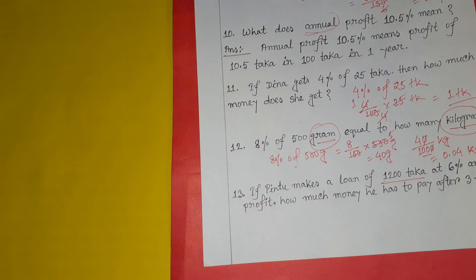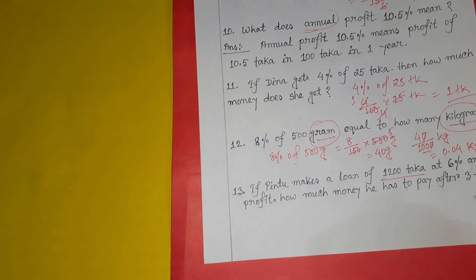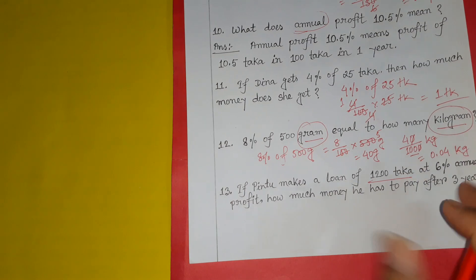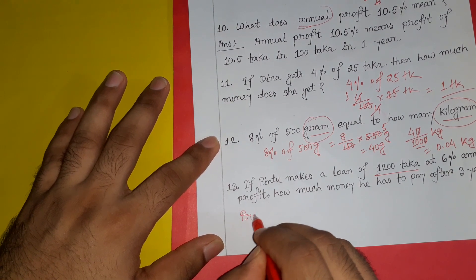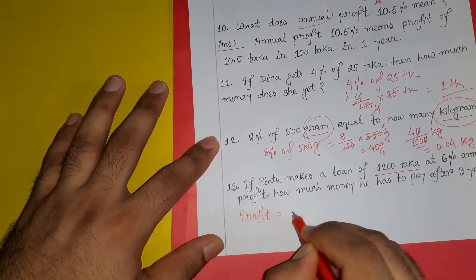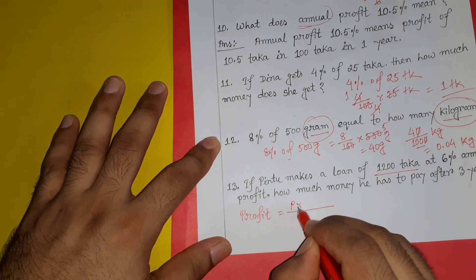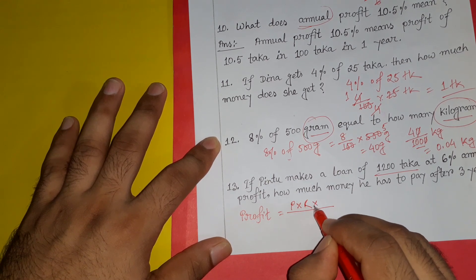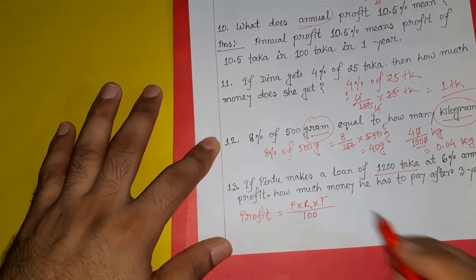Now we will see what we call our money — how much money has to be paid after 3 years. We use a credit arrangement. The profit formula is: principal multiplied by rate of profit, multiplied by time, divided by 100. The principal is 1200.